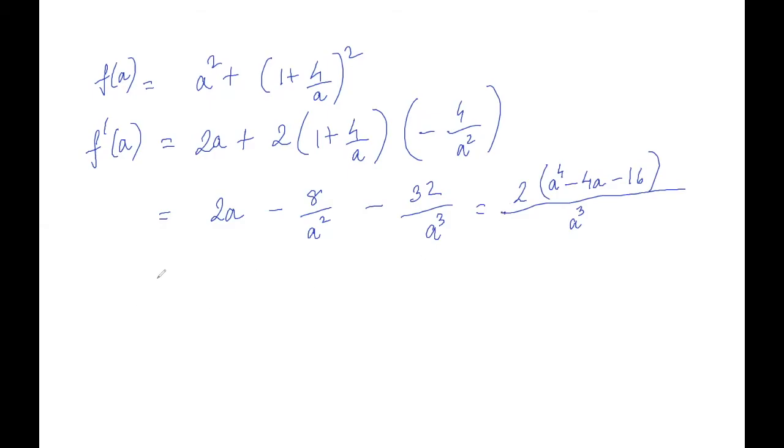Now this equals 0 when a⁴ - 4a - 16 equals 0, or a⁴ equals 4a plus 16. And if you notice that this equation, so if you draw the graphs of 4a plus 16, so it's basically a line, and a to the power 4. Now you remember a is x plus t, which is greater than 0. So it looks like this. And they cut at only one point. So only one real solution of this equation.